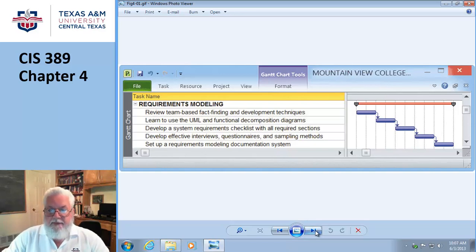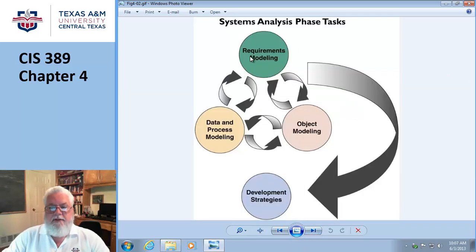Okay. On page 132 they have this little diagram. And we're right here. We're at the requirements modeling. So this is chapter 5 for data. This is chapter 6 for object modeling. And this is chapter 7 for development strategy. So we're currently in chapter 4.